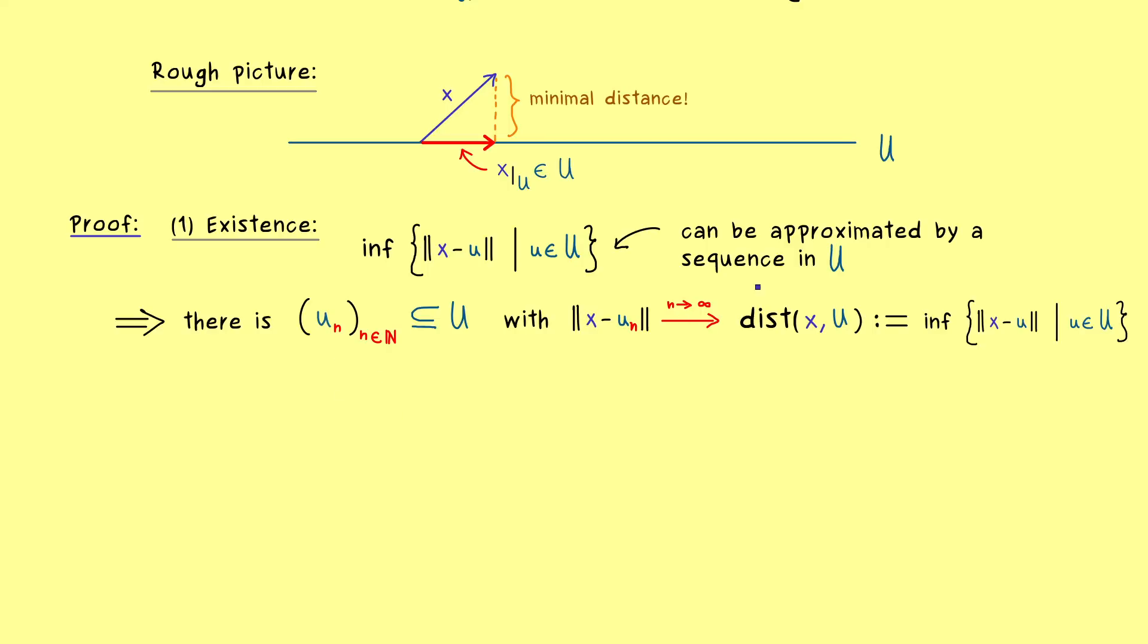Okay so now we have the existence of such a sequence and now with that one we can calculate more. And you might already guess what we want to use is the geometry we have in our Hilbert space. This means we will consider the norm squared and use our parallelogram law. In fact we have shown that the parallelogram law exactly tells us that the norm is induced by an inner product. Okay so now you can see here we consider the difference between u_n and u_m for two different indices n and m. And if this difference here in the norm goes to 0 when n and m go to infinity then we have a so-called Cauchy sequence.